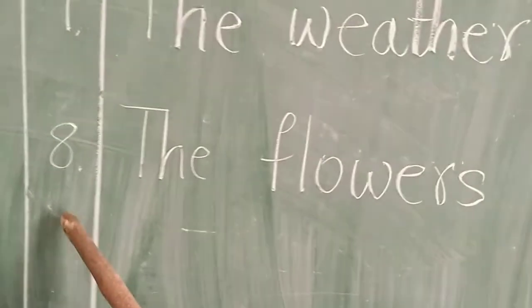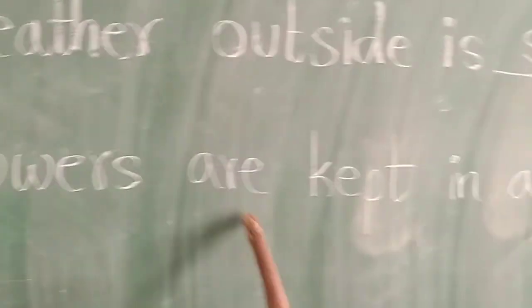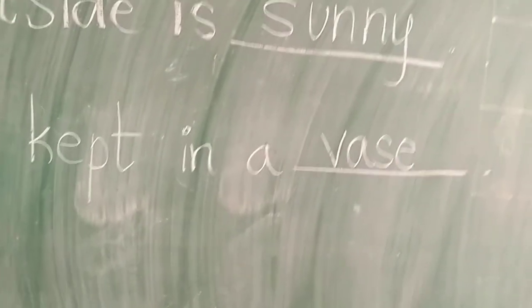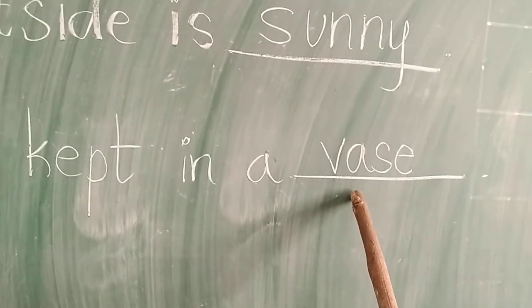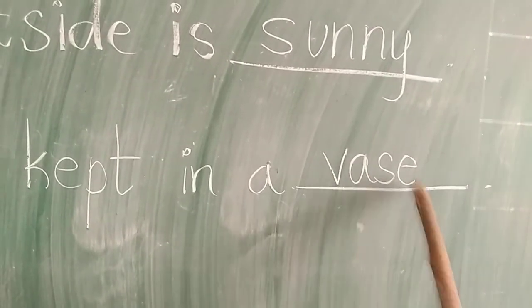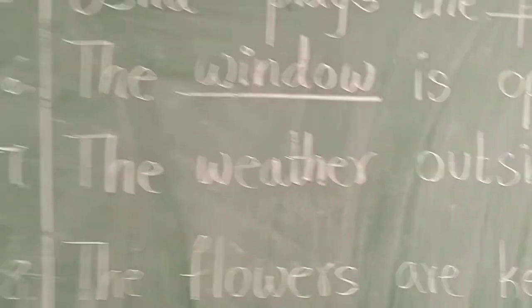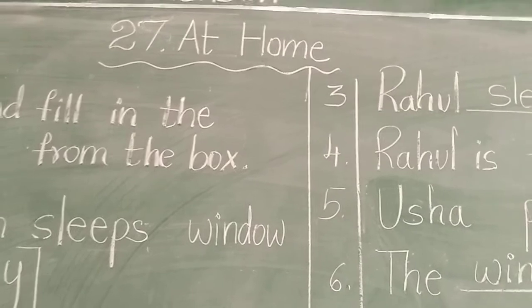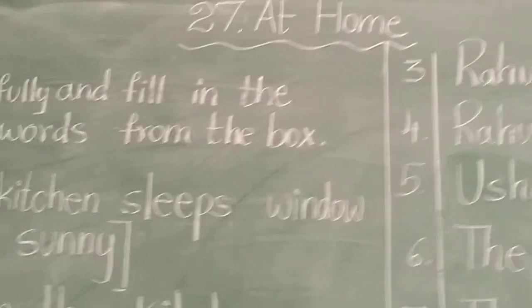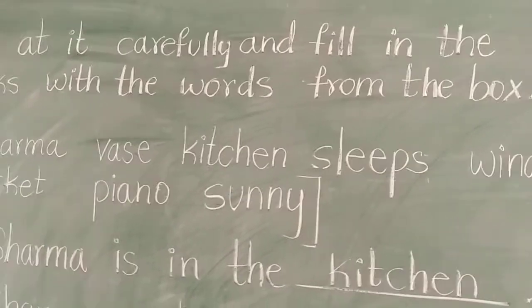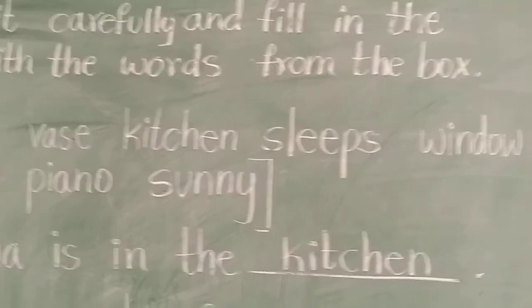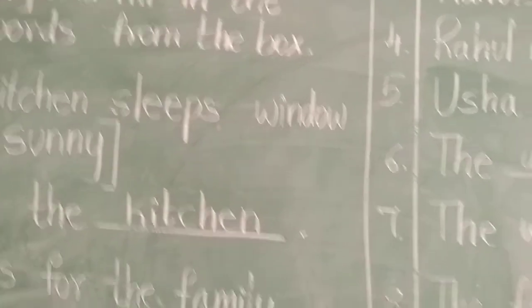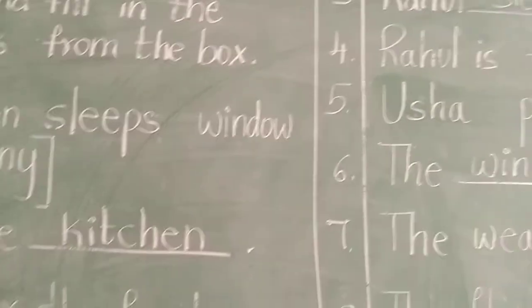Eighth one: The flowers are kept in a dash — in a vase. Spelling: V-A-S-E, Vase. So this is about lesson number 27, 'At Home.' Read this and learn the spellings. Have a good day, take care.